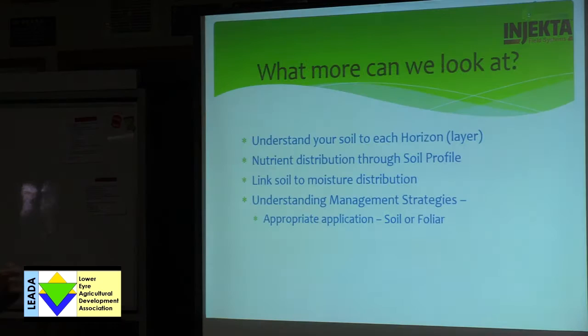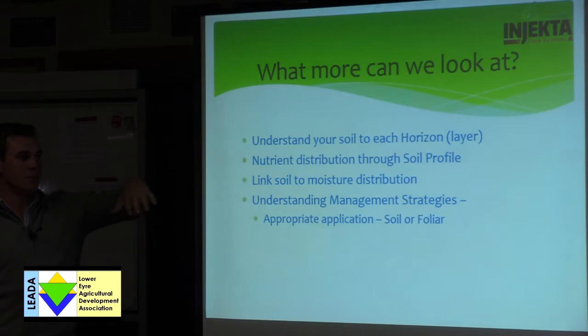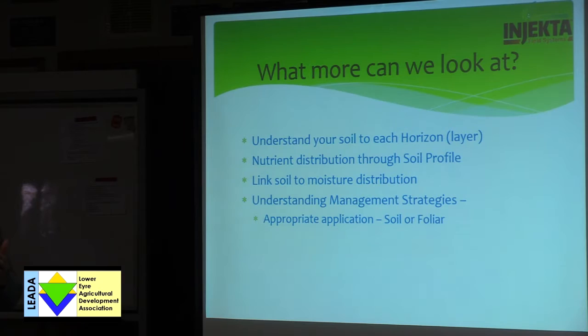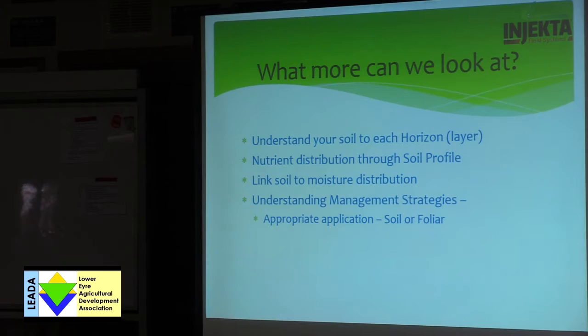To summarise: understand your soil to each horizon, each layer within that profile. Then understand your nutrient distribution through the profile — is it high in the 0–10, low in the 10–20? That causes different stresses, especially when linking that to moisture distribution. Are there toxicities sitting down where your moisture is, and that's where your plants are drinking from? Understanding your management strategies — soil or foliar — once you understand your soil and the tests, you can go in upfront with full confidence, or go half and half, or split your applications. Michael will build onto this later when we start looking at the in-furrow science. Thank you for your time, and hopefully that's sparked a bit of interest.